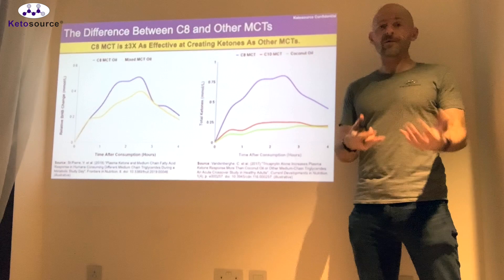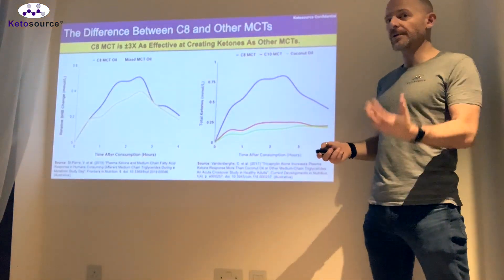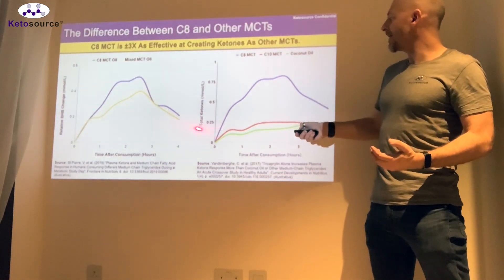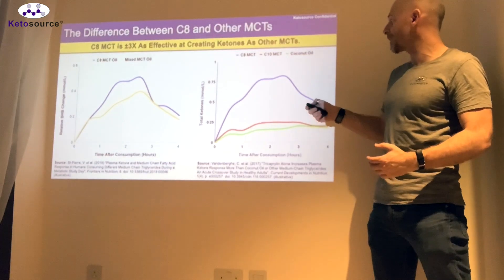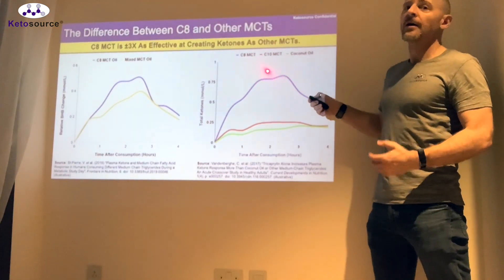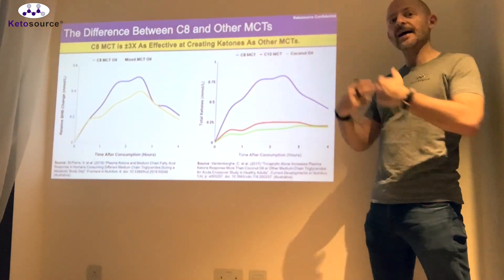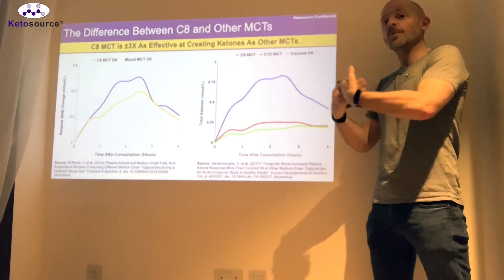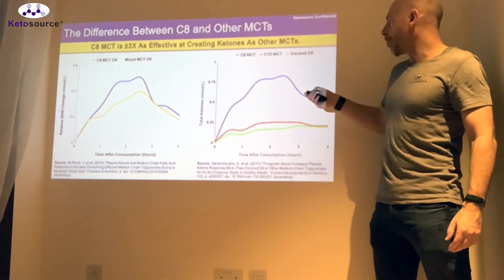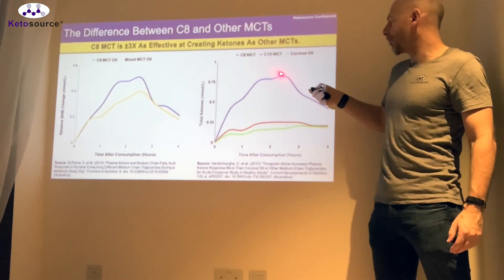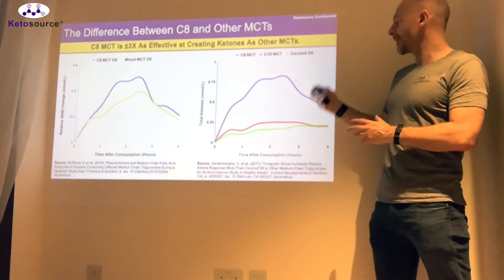We can make use of both of those ketone types, so it's still relevant, though you won't be able to see acetoacetate on a standard blood meter. This is where we get the 'three times as effective' figure: the difference between the purple line (C8) and the red line (C10) — which has the most potential to raise ketones besides C8 — is about three times. C8 gets out to about 0.8 here, while C10 is about 0.2, so it's quite a significant difference.